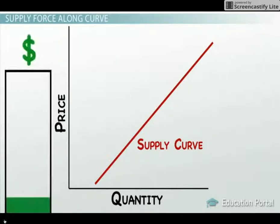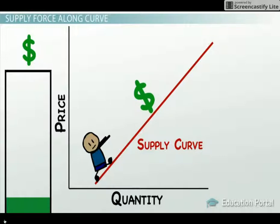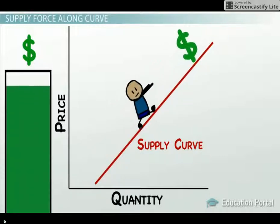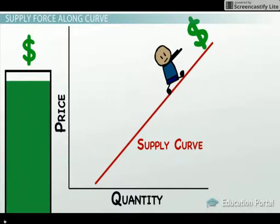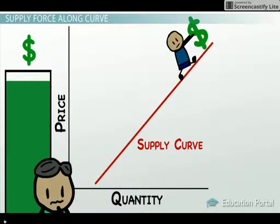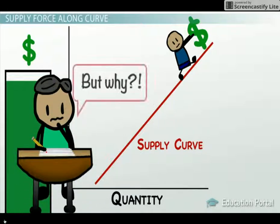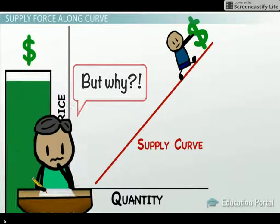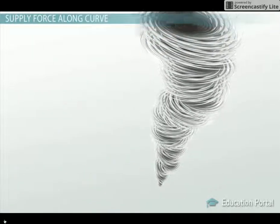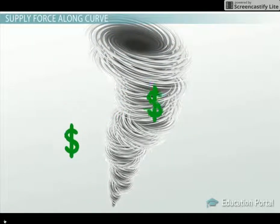Just like a movement along the demand curve, a movement along the supply curve means that the supply relationship has remained constant. We are moving up or down the existing supply curve because, once again, the price for the good or service has changed. So why would quantity supplied change? Just like quantity demanded, the quantity supplied changed because of the price.